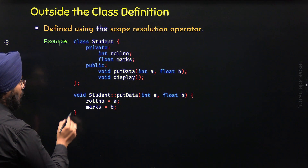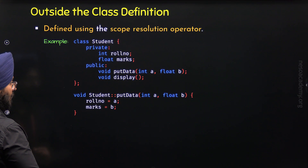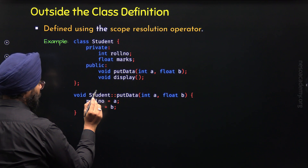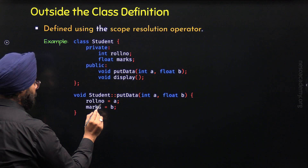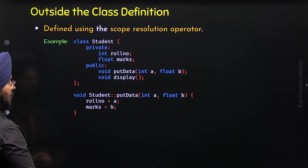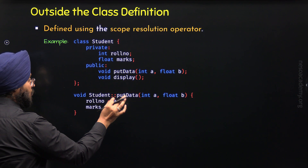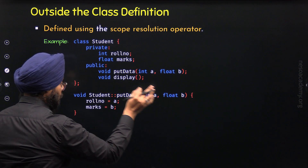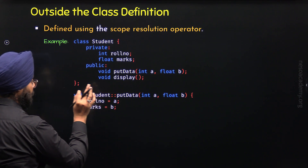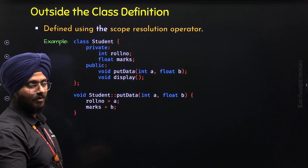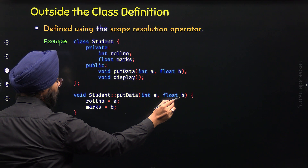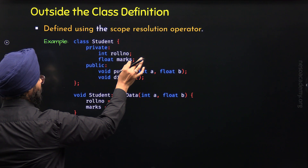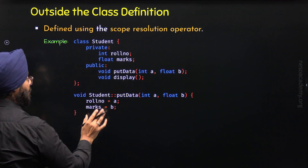Here is the definition of this function. Within braces, I have written the code: row number equals A and marks equals B. I want to store the value of variable A within the row number variable, and the value of variable B within the marks variable. So whatever values we receive in these parameters will be provided to the private members, that is, row number and marks.